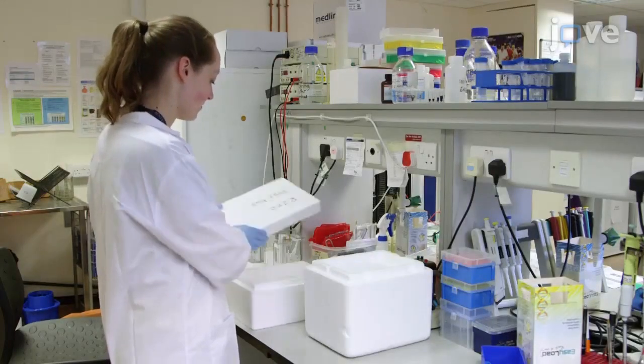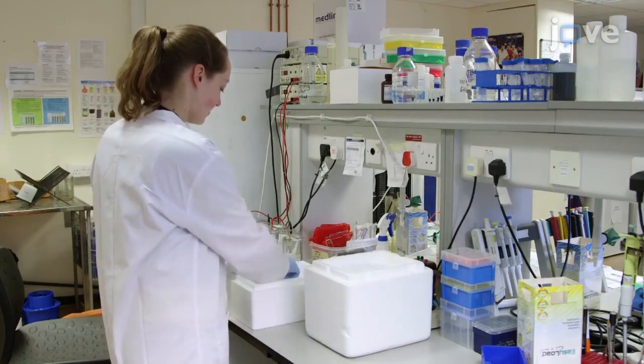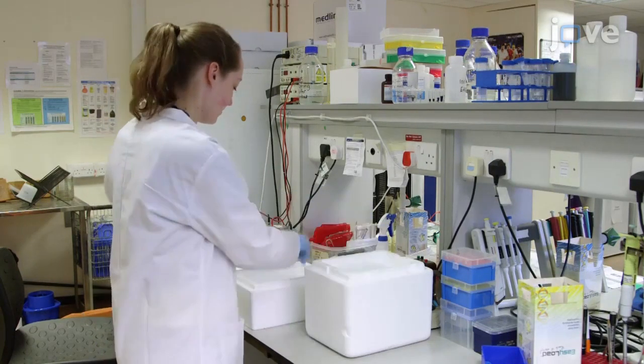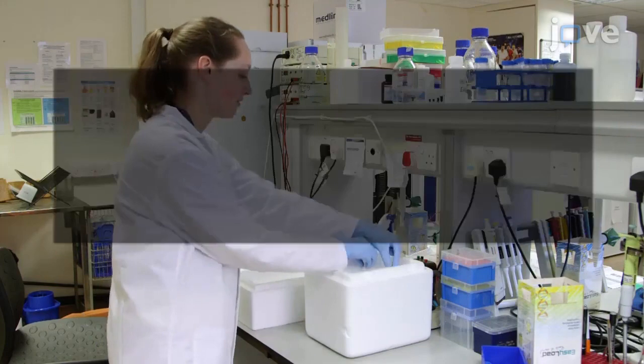To extract proteins from snap frozen cell or tissue samples, thaw the minus 80 degree samples on ice before washing the samples as appropriate, according to the table.